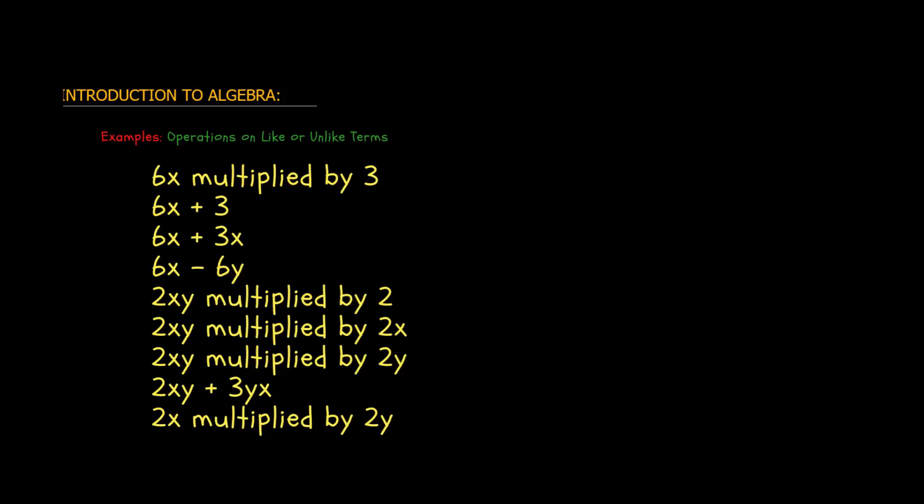We have learned the concept of like terms. Let us do a few examples because this is a concept you should be very clear on. Students make a lot of mistakes by being unable to recognize like terms and performing operations which are not allowed.